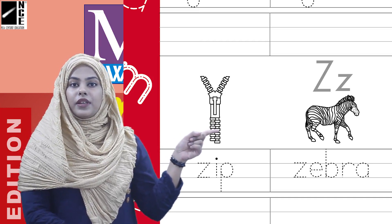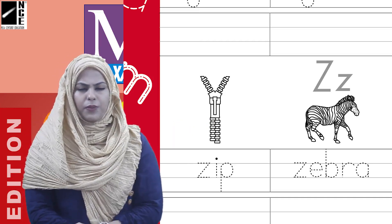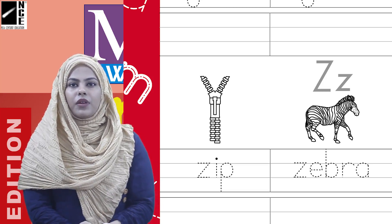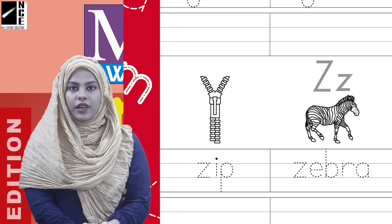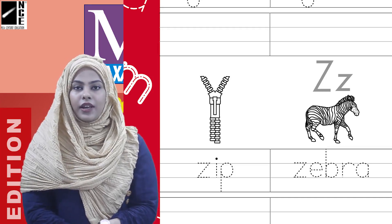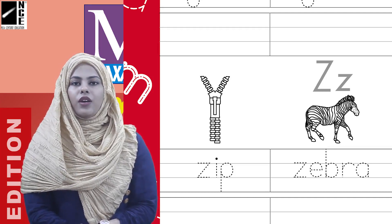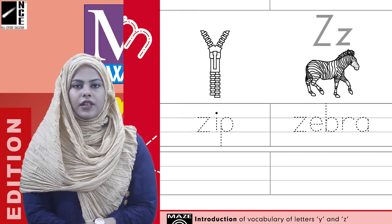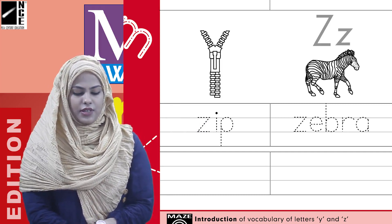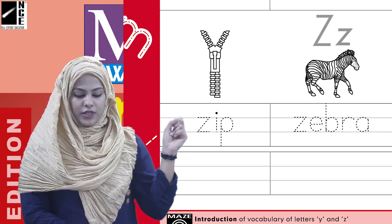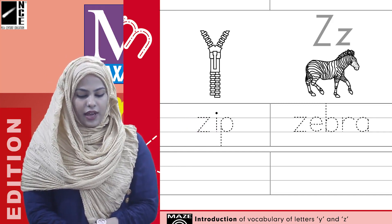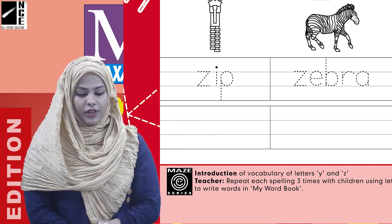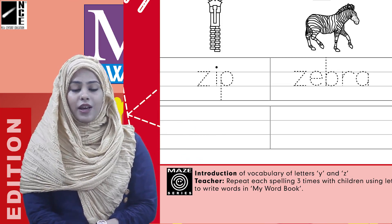This picture is a zip. Zip ka toh aapko pata hai na — it's on the front of jackets, you open and close it. Sometimes pouches that hold your pencils have zips, and bags too have zips. The spelling of zip is Z-I-P. We will trace the word zip with the help of a pencil and then write it in the blank.